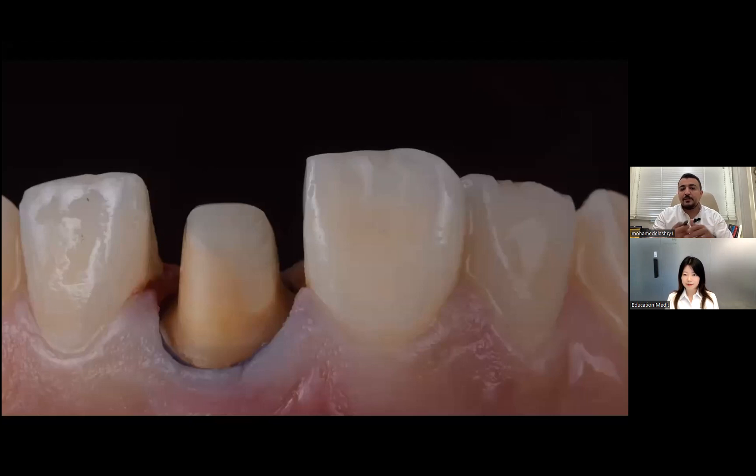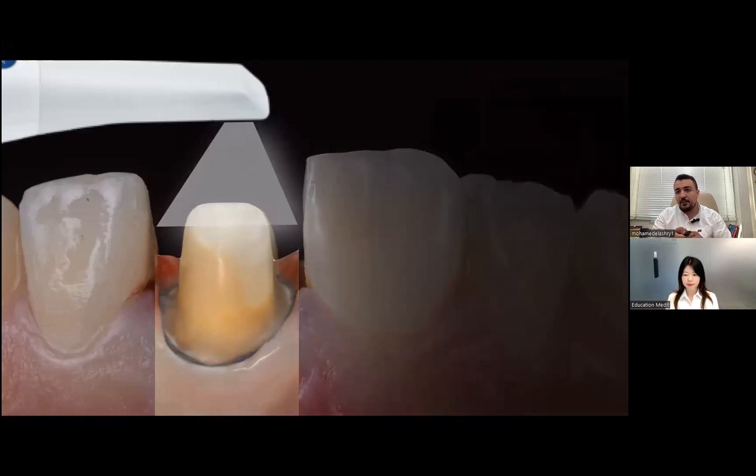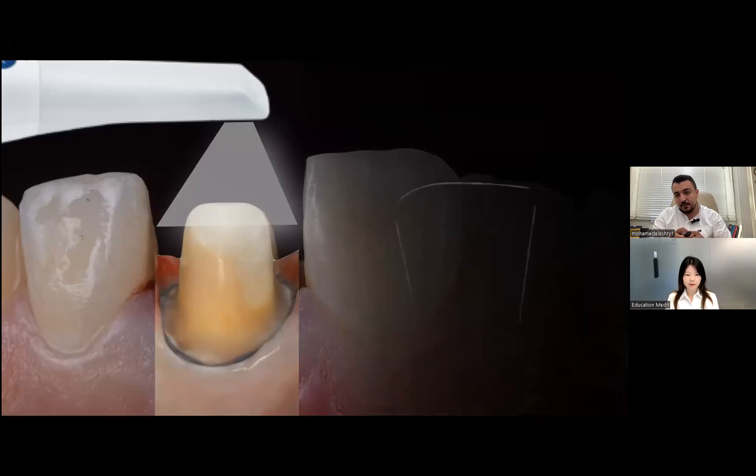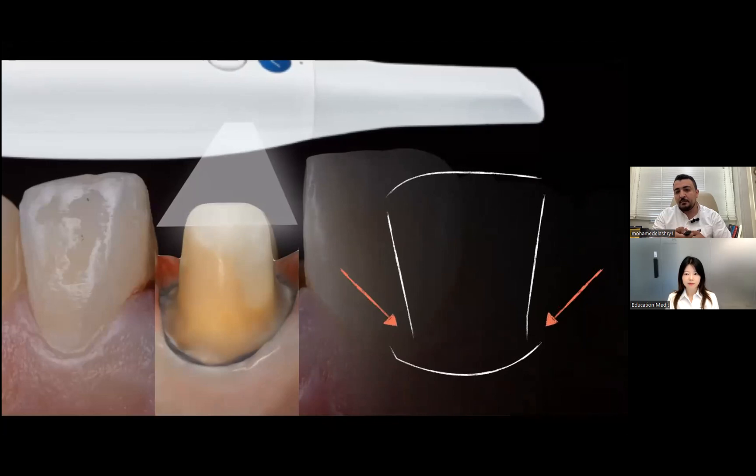For this prep, for example, I have ideal taper, so I can scan the prep in a very nice way and very easy way. But if I have an undercut like this, the scanner cannot record this area below the undercut and above the finish line.